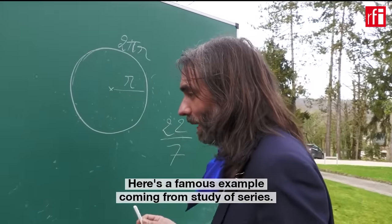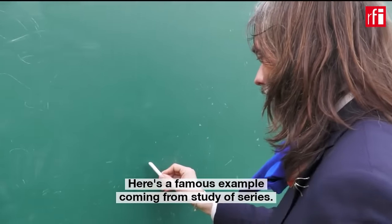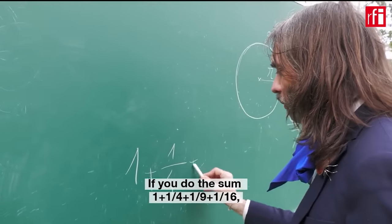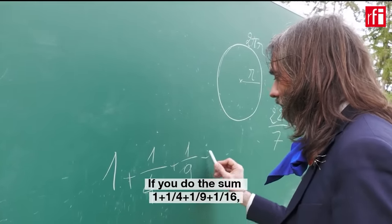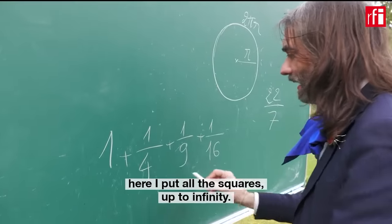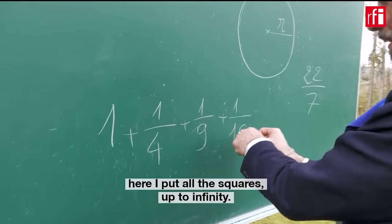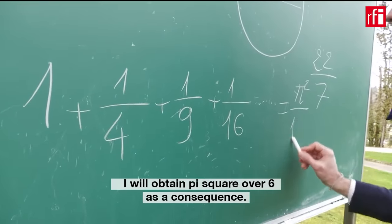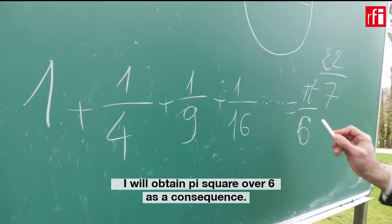Here's one example, a famous example coming from a study of series. If you do the sum 1 plus 1 over 4 plus 1 over 9 plus 1 over 16, you see here I put all the squares, this equals π squared over 6 as a consequence.